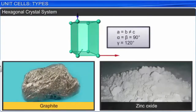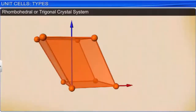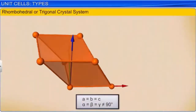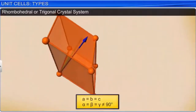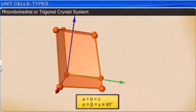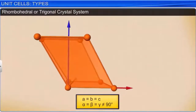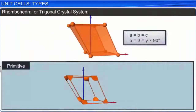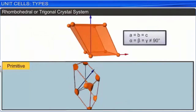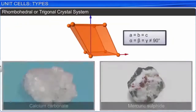In a rhombohedral or trigonal crystal system, the three axes are of equal length and inclined at the same angle, but the angle is not equal to 90 degrees. The only possible lattice is primitive. Calcium carbonate and mercuric sulfide are examples.